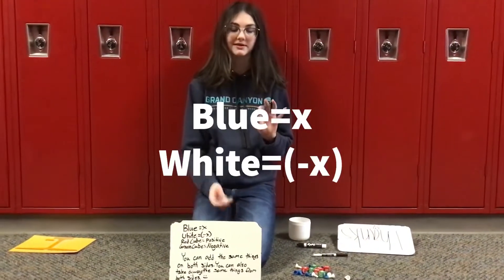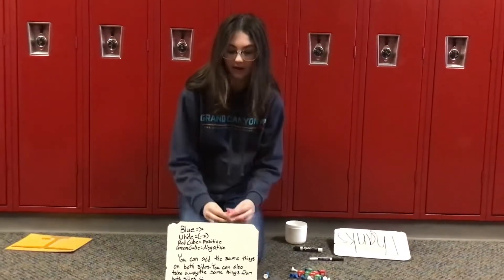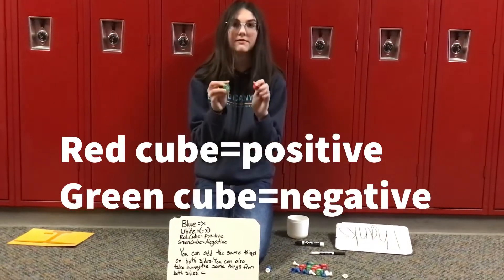The blue pawn equals x, and the white pawn equals the opposite of x. The red cube is a positive number, and the green cube is a negative number.